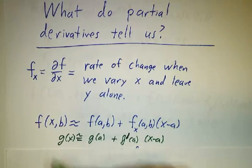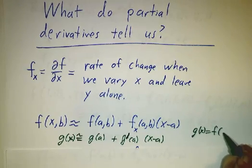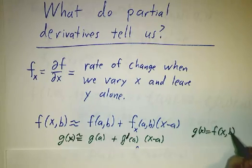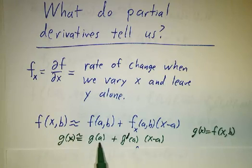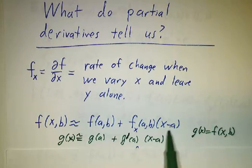And it's not just an analogy. If we define the function g of x to be f of x b, then this is literally the same thing. g of x is f of x b, g of a is f of a b, g prime of a is how much g changes as we change x. That's the partial derivative, and x minus a is x minus a.